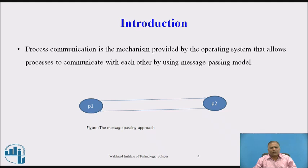Introduction. Process communication is the mechanism provided by the operating system that allows processes to communicate with each other. Here P1 and P2 are two processes residing on two different systems or nodes. They are communicating with each other — P1 is sending messages to P2 and P2 is sending messages to P1.